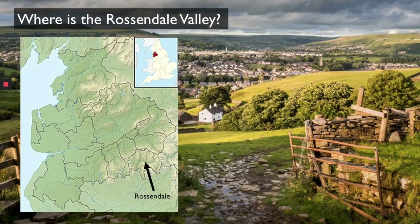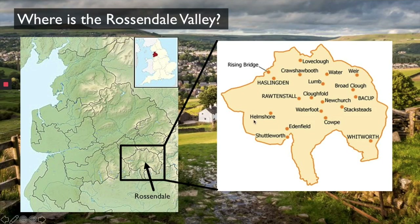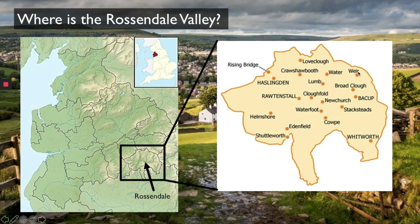Let's have a look at some of the towns and villages we'd expect to see in Rossendale. Rossendale has three major towns: Haslingden, Rawtenstall, and Bacup. There are many villages within Rossendale itself, but here are some of the major ones: Crochet Booth, Culfold, New Church, Stacksteads, Weir, Whitworth, Shuttleworth, Edenfield, Helmshore, and so on. Most of these villages and towns follow the centre of the valley — the valley floor.